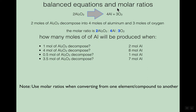Going back to the recipe analogy: if you put all those ingredients together, you get bread. So these coefficients show a ratio. I can read it as a sentence: two moles of aluminum oxide decompose into four moles of aluminum and three moles of oxygen. That's a balanced equation, and it's very helpful for converting between elements.